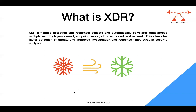XDR enables you to execute responses across different security layers — it could be email, it could be endpoint, or anything else — because it is collecting data from multiple sources across your environment. So IDS mainly focuses on detection based on signature or anomaly approaches. XDR involves advanced machine learning and AI for detection, collects data from multiple security layers including email and endpoint, and provides a much more advanced response than IDS or IPS. I hope this clarifies the difference between IDS, XDR, and IPS.